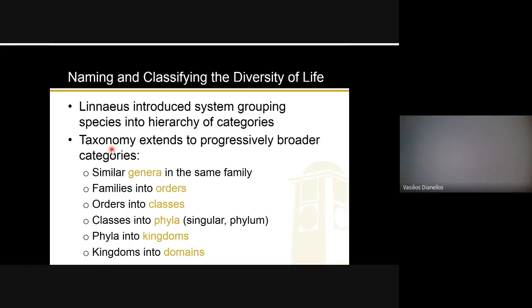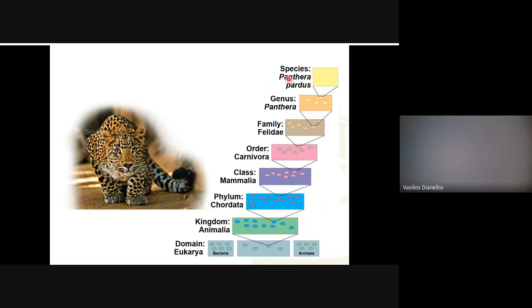The scientific name also puts a species into a hierarchical category. Taxonomy extends to progressively broader categories. Species is the most specific, then a bunch of similar species are grouped into a genus, similar genera go into the same family, families into orders, then classes, phyla, kingdoms, and domains. You need to memorize this order. Remember it as: species, genus, family, order, class, phylum, kingdom, domain — or from big to small: domain, kingdom, phylum, class, order, family, genus, species. There will be about one or two test questions on this.